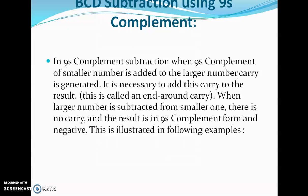In 9's complement subtraction, when the 9's complement of the smaller number is added to the larger number and a carry is generated, it is necessary to add this carry to the result — this is called an end-around carry. When the larger number is subtracted from the smaller one, there is no carry and the result is in 9's complement form and is negative.